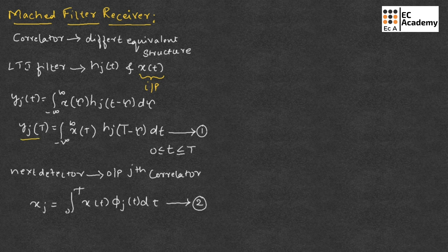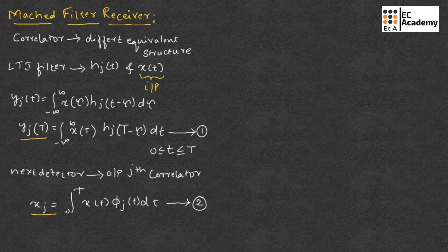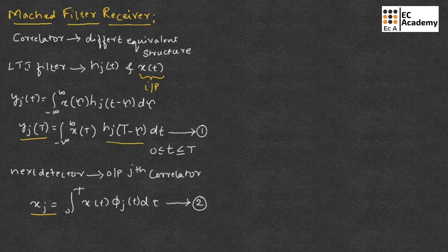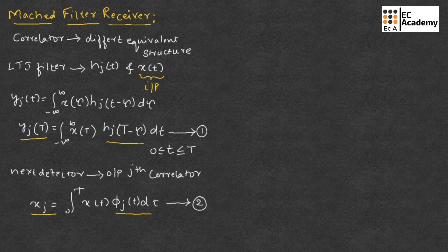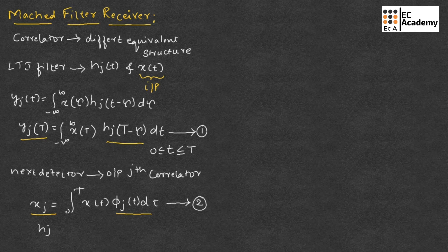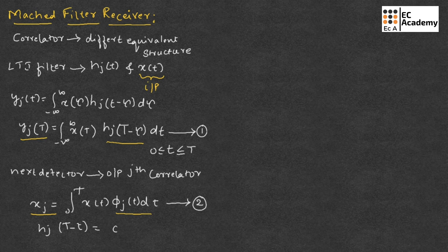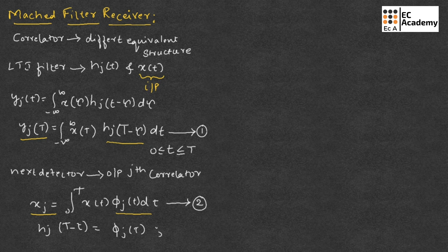If we consider yj of t and xj of t, if we equate these two values from these two equations, we will get Hj of t minus tau will be equal to phi j of t. So we can write Hj of t minus t is equal to phi j of t. This will be for t value ranging between 0 to capital T.